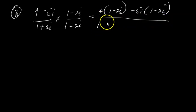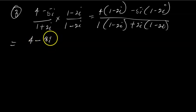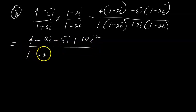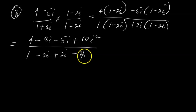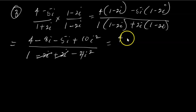Opening the brackets, the numerator is: 4 × (1 - 2i) minus 5i × (1 - 2i), which expands to 4 × 1 = 4, minus 8i, minus 5i, plus 10i². The denominator is: 1 × (1 - 2i) plus 2i × (1 - 2i), which expands to 1 - 2i + 2i - 4i².